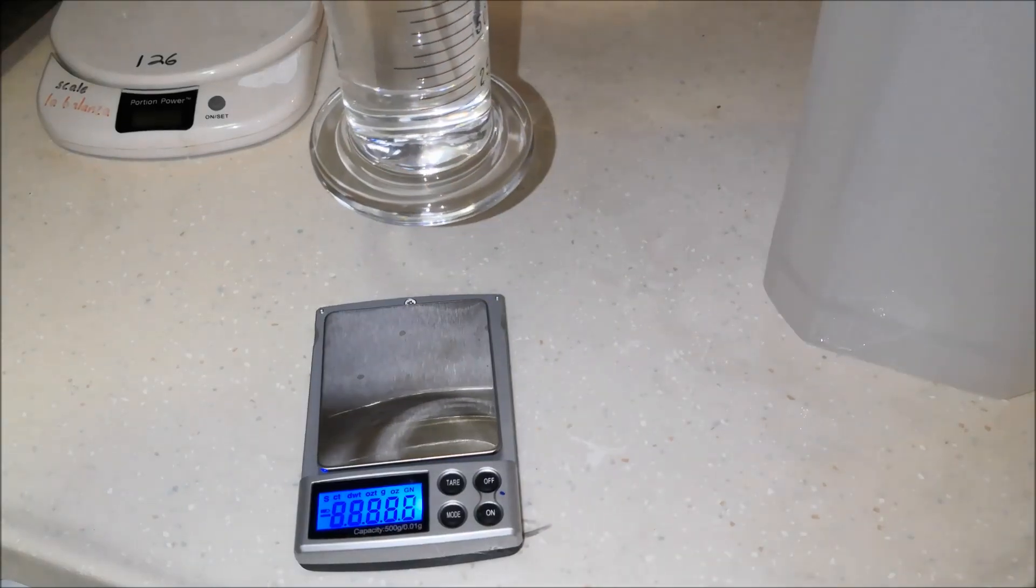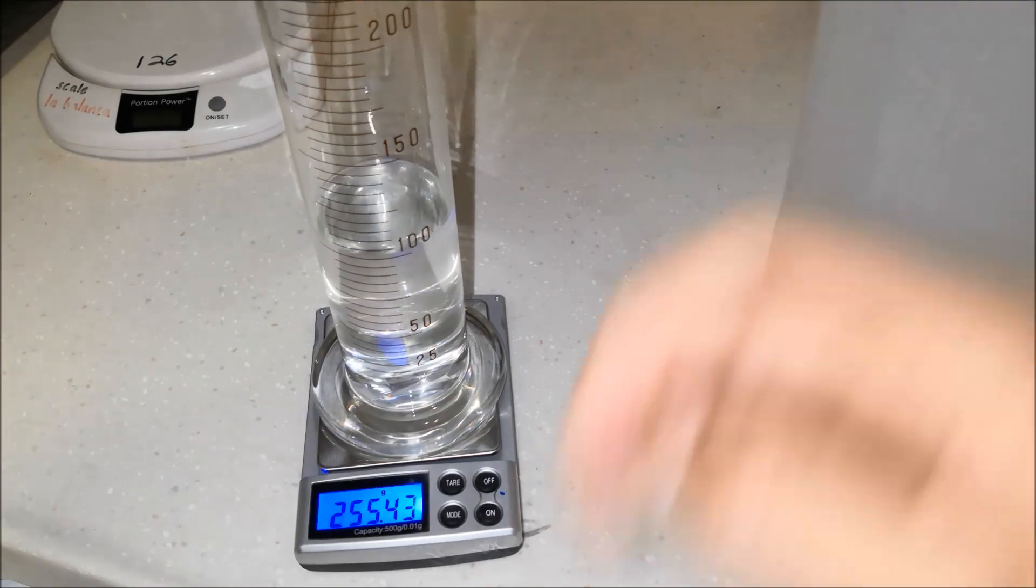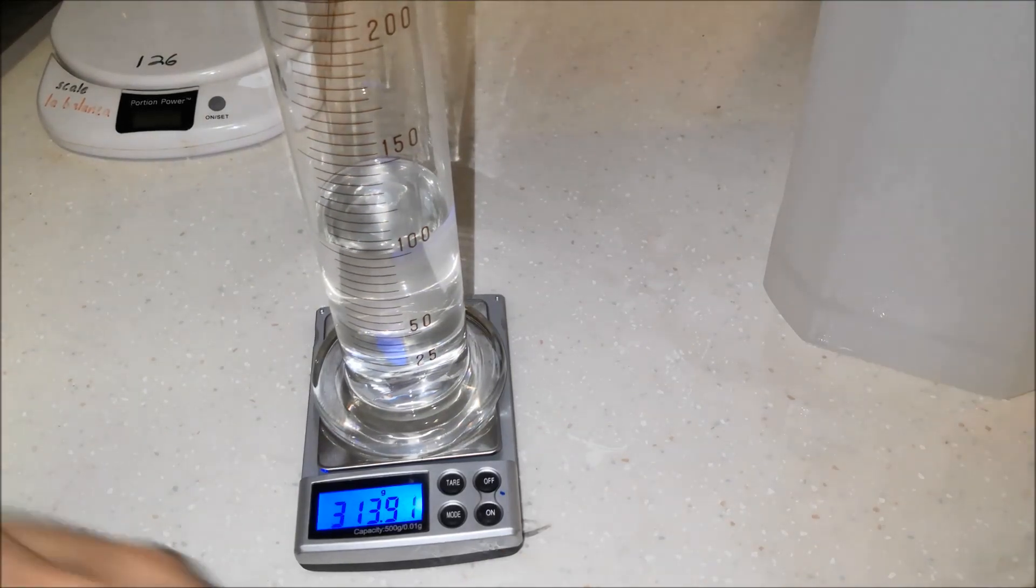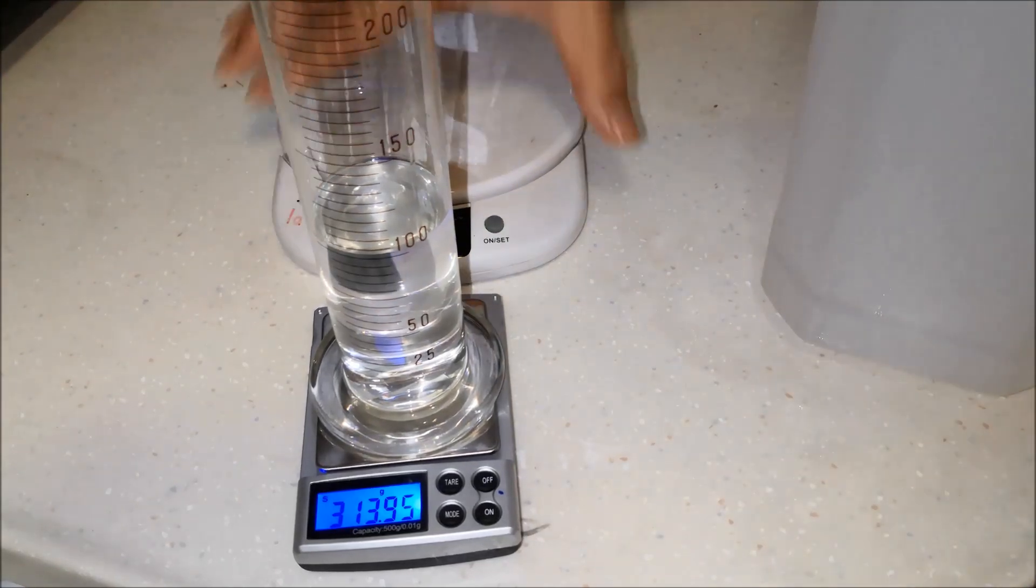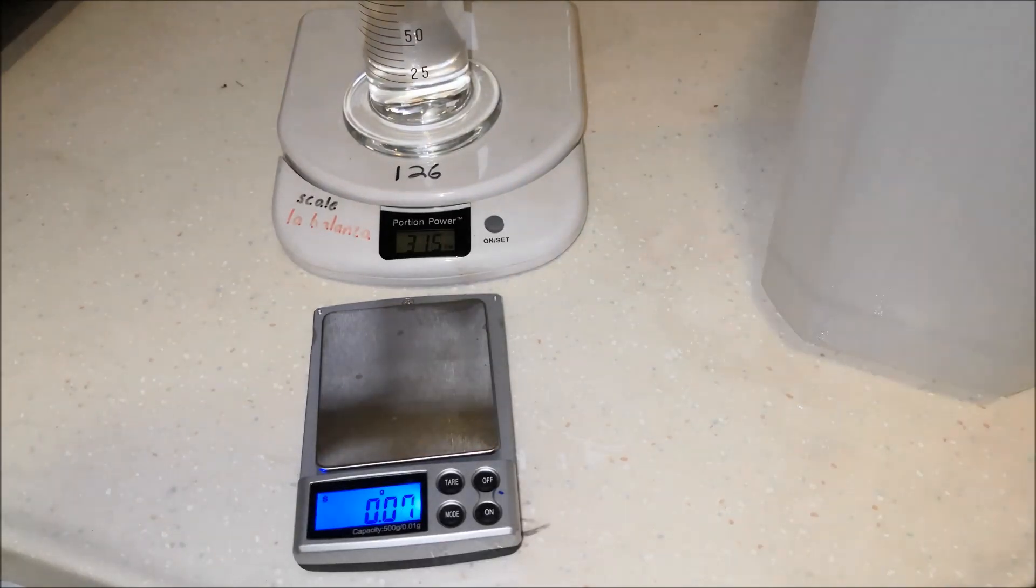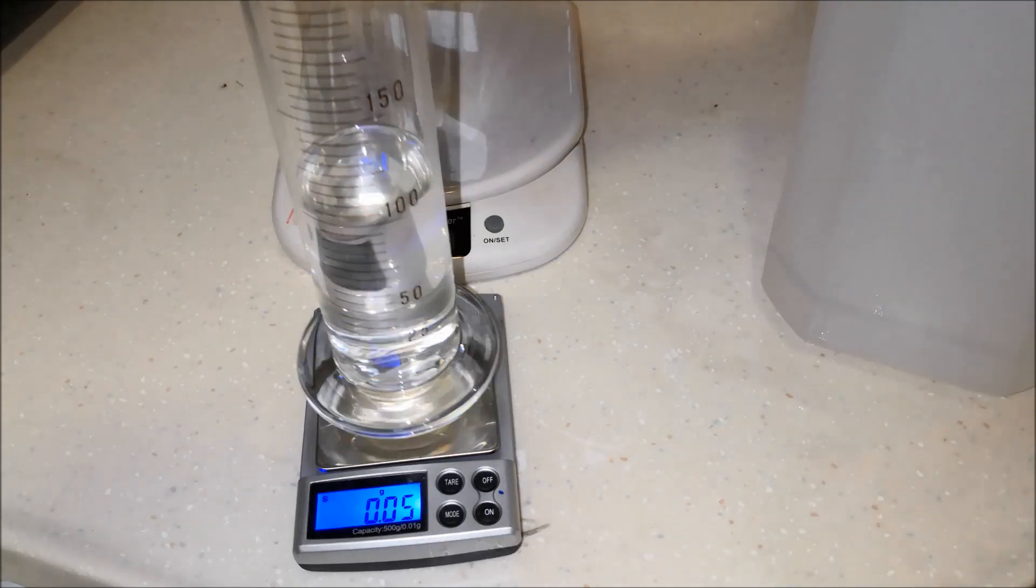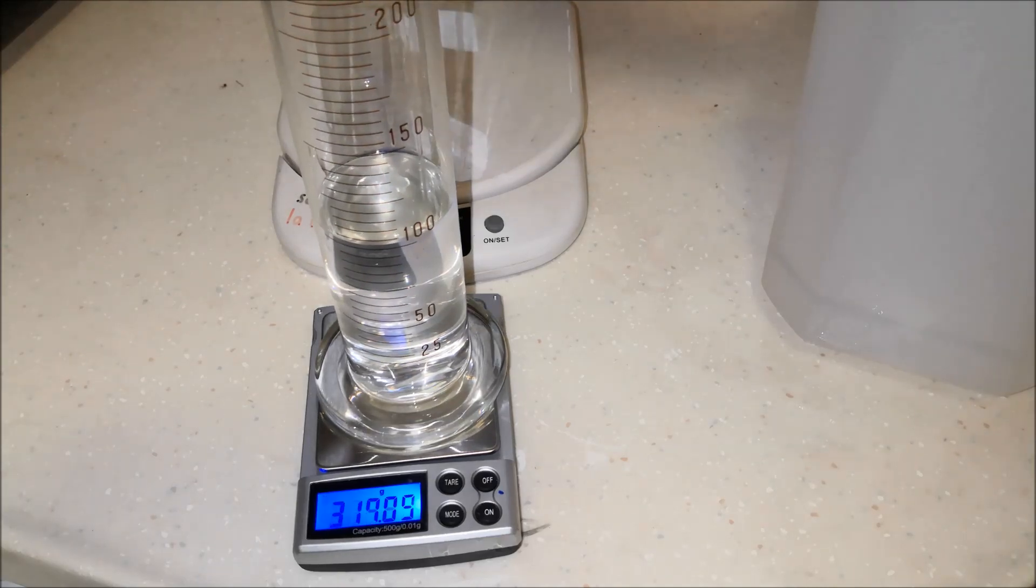We'll use the digital scale over here again. Let that zero out. Okay. Here we go. And it's telling us 313.94 grams. And we'll just cross check that with the kitchen scale. Which is telling me 315. That's probably within the margin of error. Let's zero this one out again. 313.89. Alright. So that's, again, within the margin of error.